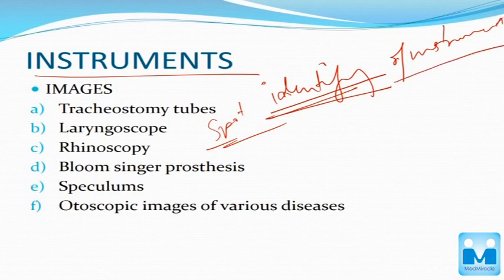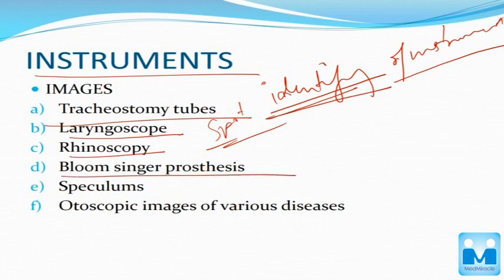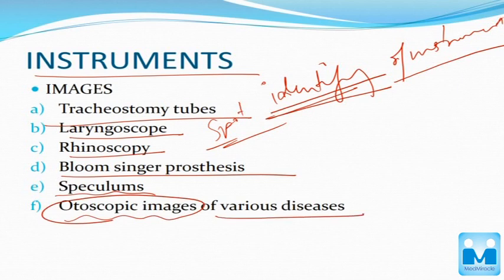The instruments you have to study are: tracheostomy tubes, laryngoscope, rhinoscope, Blom-Singer prosthesis, speculum, and otoscopic images of various conditions — I have already shown you two images, so stress on those.